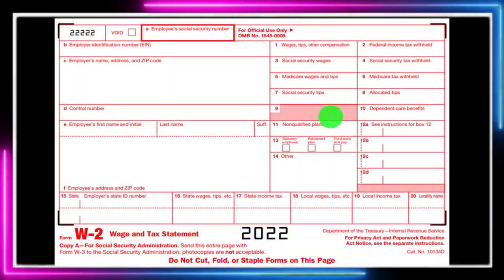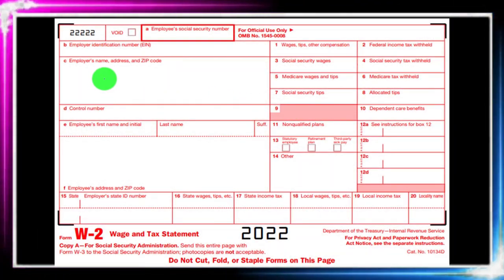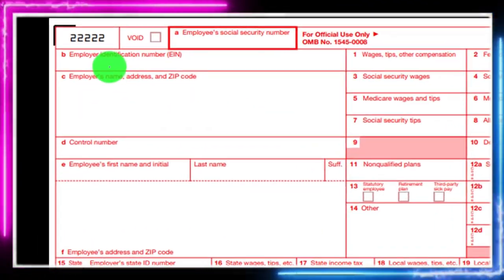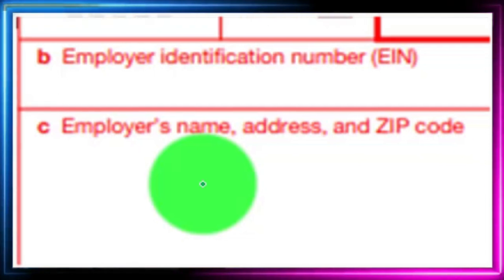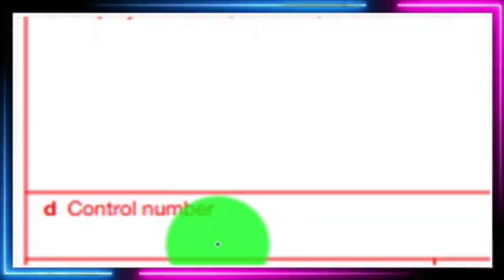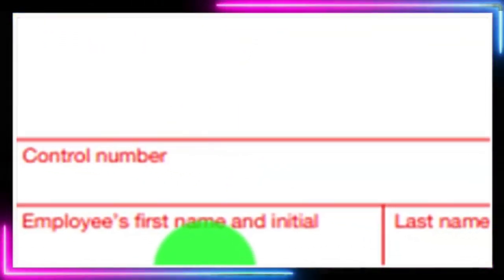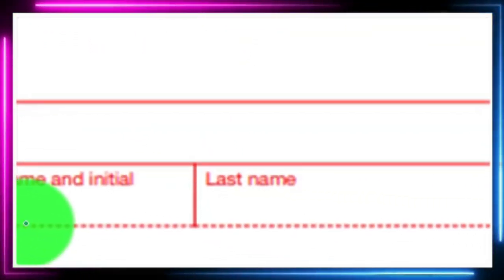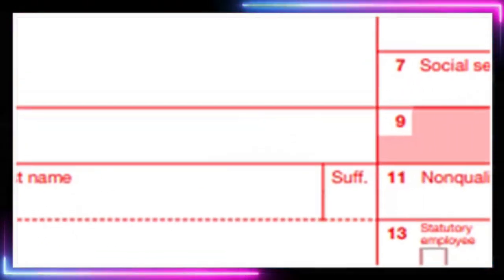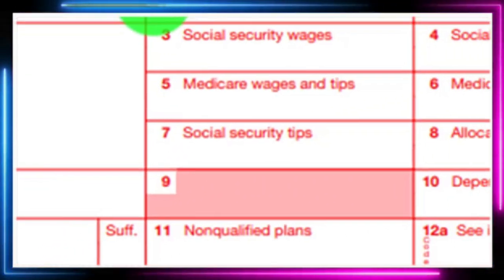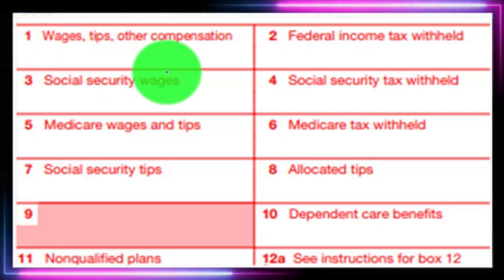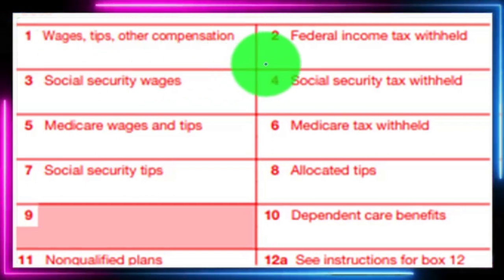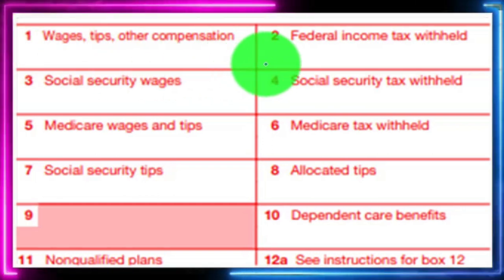Let's go through the W-2 quickly. We've got the employer identification number, the employer's name, address, and zip code, the control number, the employee's first name, initial, and last name. Then the boxes: Box 1 — wages, tips, other compensation — and Box 2 — the federal income tax withheld.